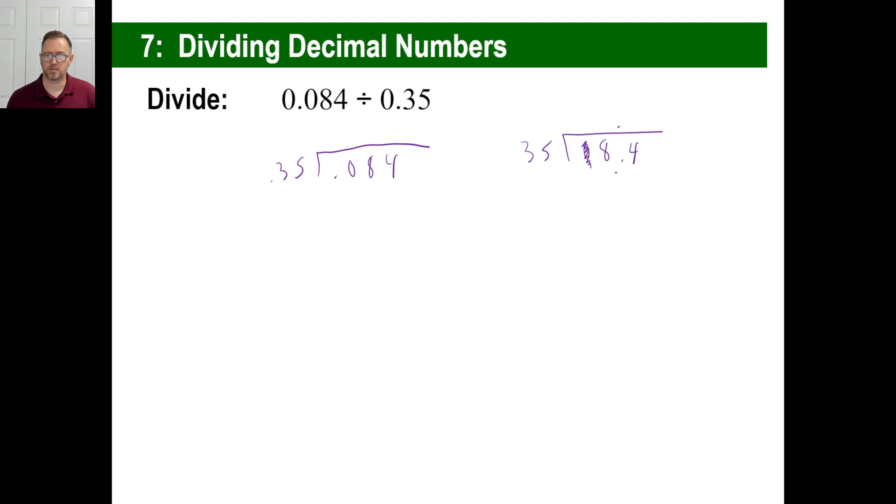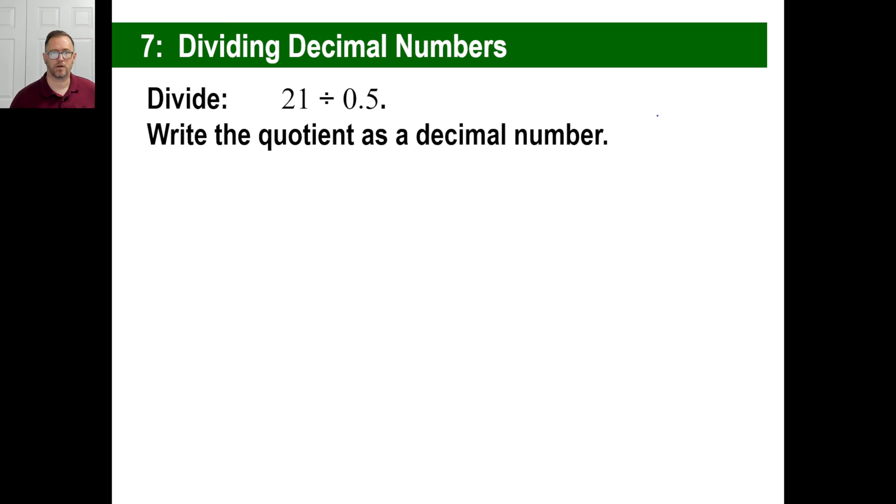There you go. And then keep the decimal and just go 35 into 84 twice. That's going to be 70. 14. And then you drop a zero because there is one. 35 into 140. And if you don't know the answer to that, give it a couple of tries. We know 35 into 70 goes twice. 70 goes into 140 twice. The whole thing goes four times. There you go.